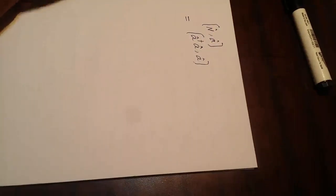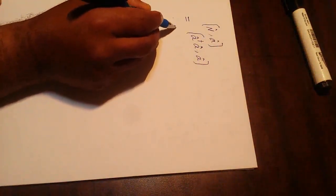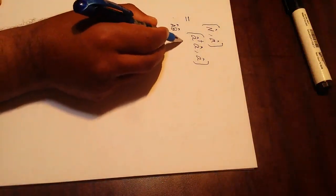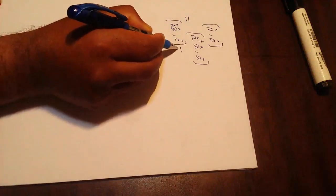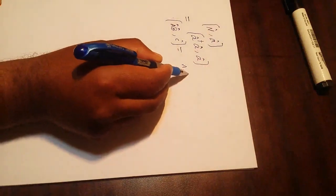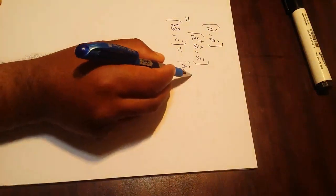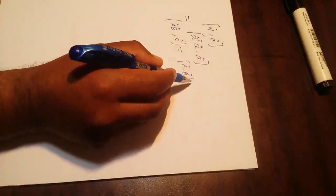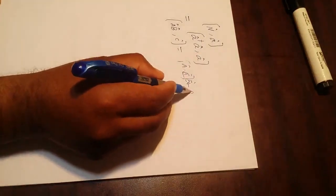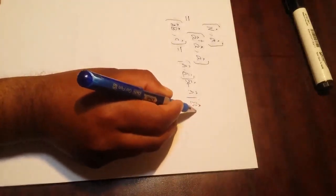So by applying the property - what property? A product of operators, [AB, C]. This property we will apply, which is equal to the commutator of A with C times B, plus operator A times the commutator of B and C.